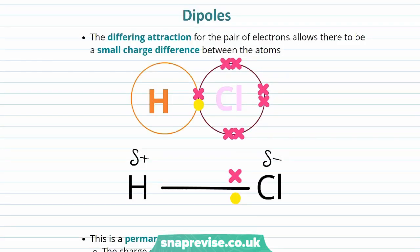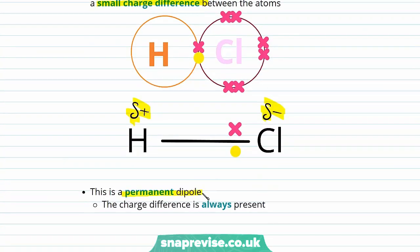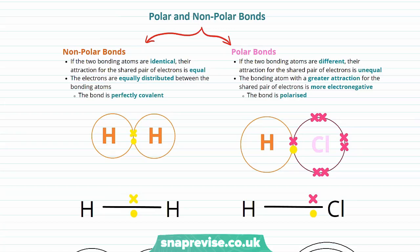This results in what we call a dipole. The differing attraction for the pair of electrons allows there to be a small charge difference between the atoms. The electrons are held more closely to our chlorine atom, making it slightly negative - delta means slightly - and our hydrogen atom will therefore be slightly positive. These dipoles are what we call a permanent dipole; this slight charge difference is always present.